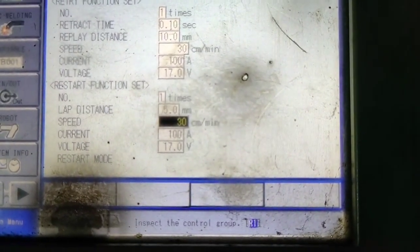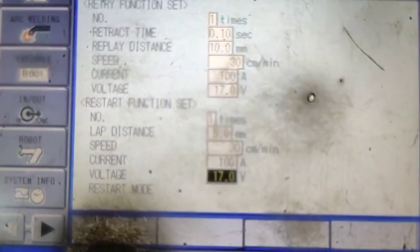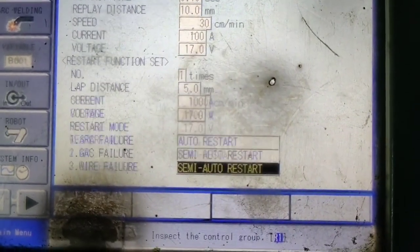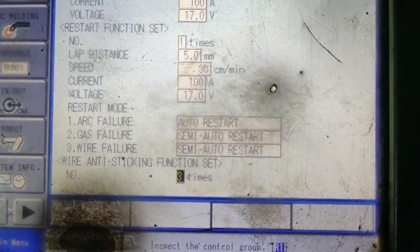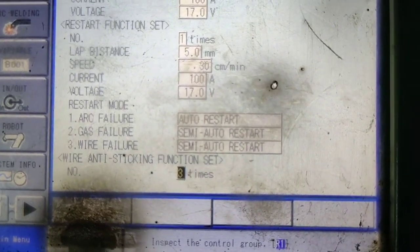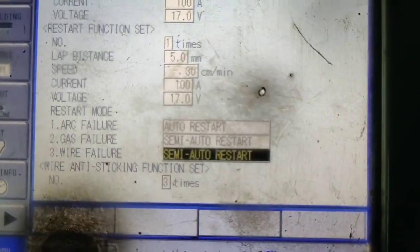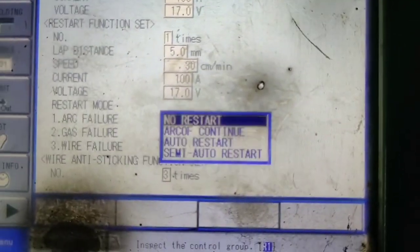In this process what happened, these are the parameters which we have enabled. In this lap distance it goes whenever your robot is stopped, your robot goes 5mm back at the speed, current, voltage, and they start welding due to which there is no void in between the material.